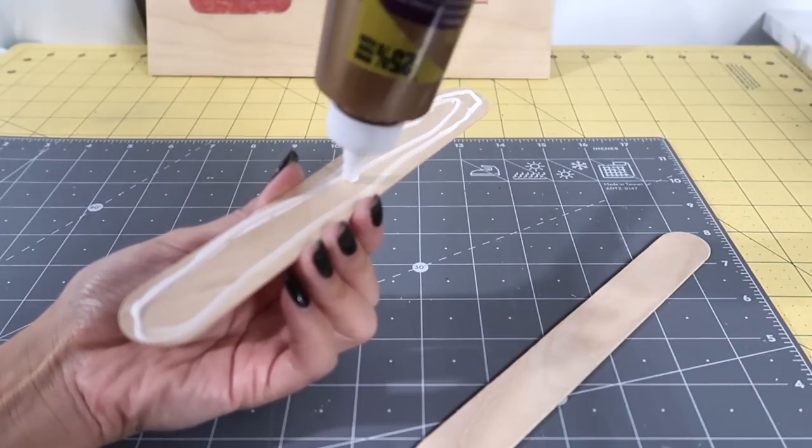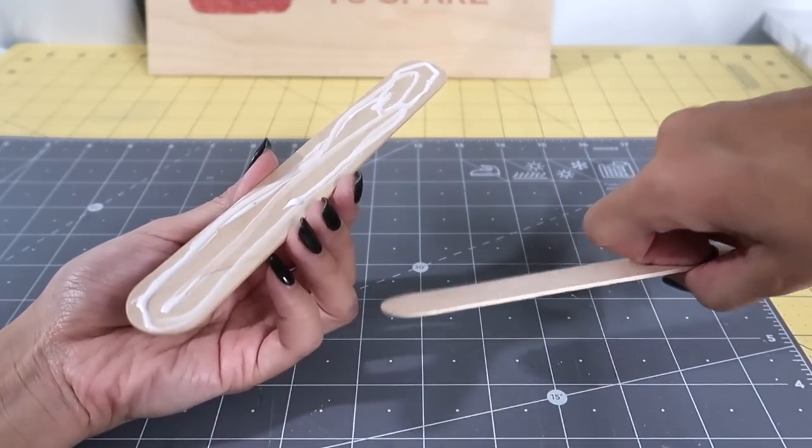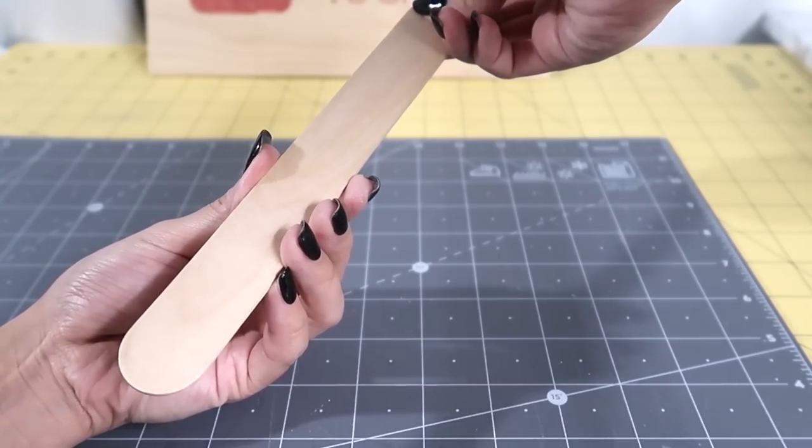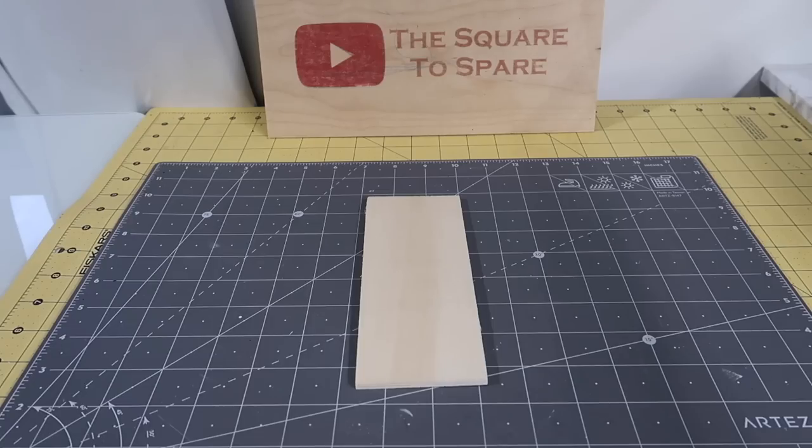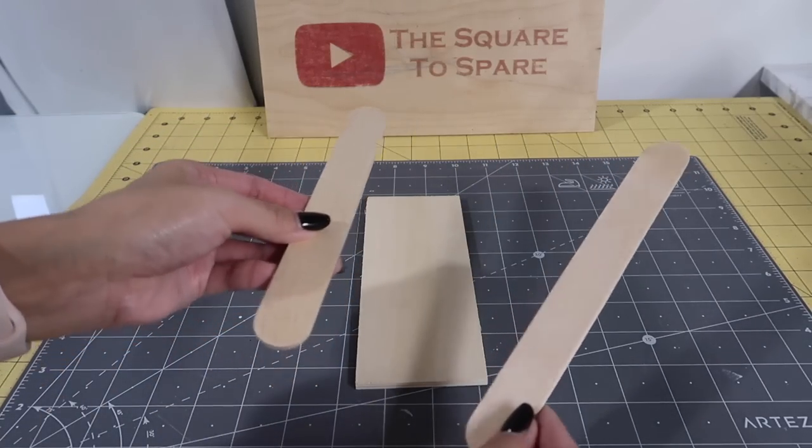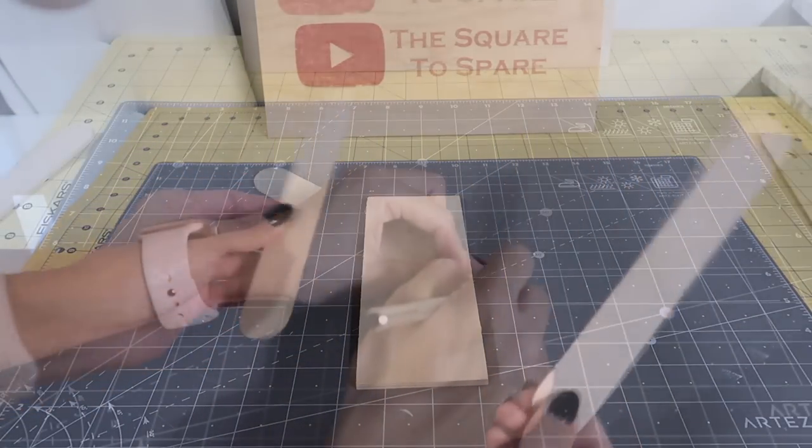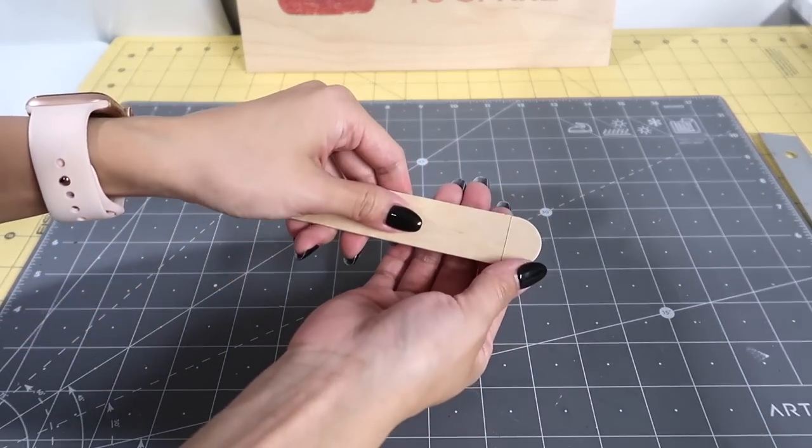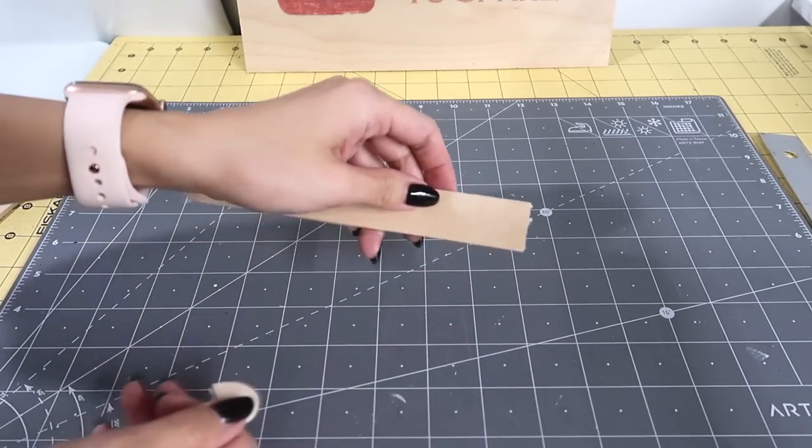I'll add one to each side of this slat. But first, I need to trim off the rounded ends. The easiest way I've found to get a crisp edge is to cut on both sides and then snap the wood.